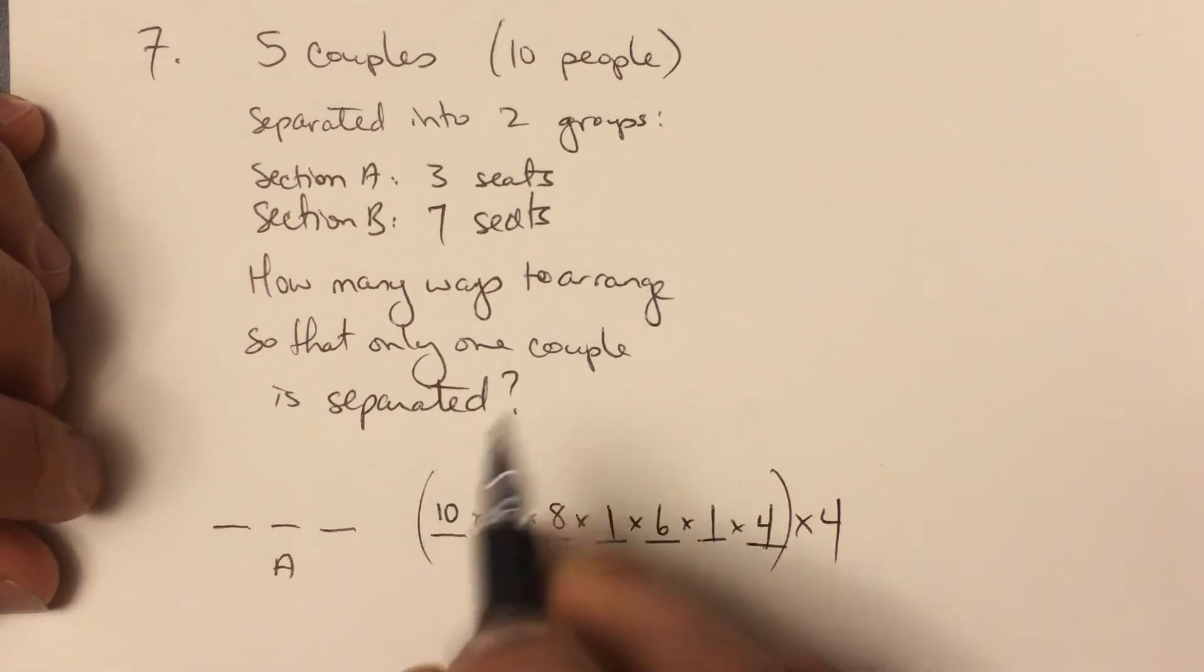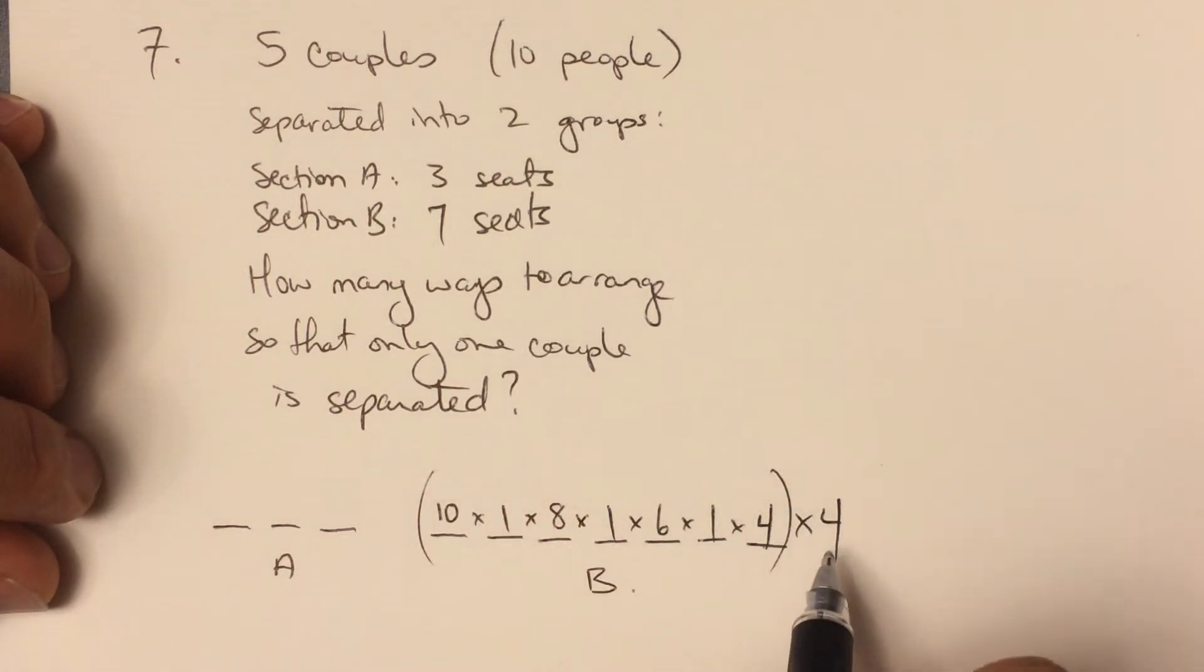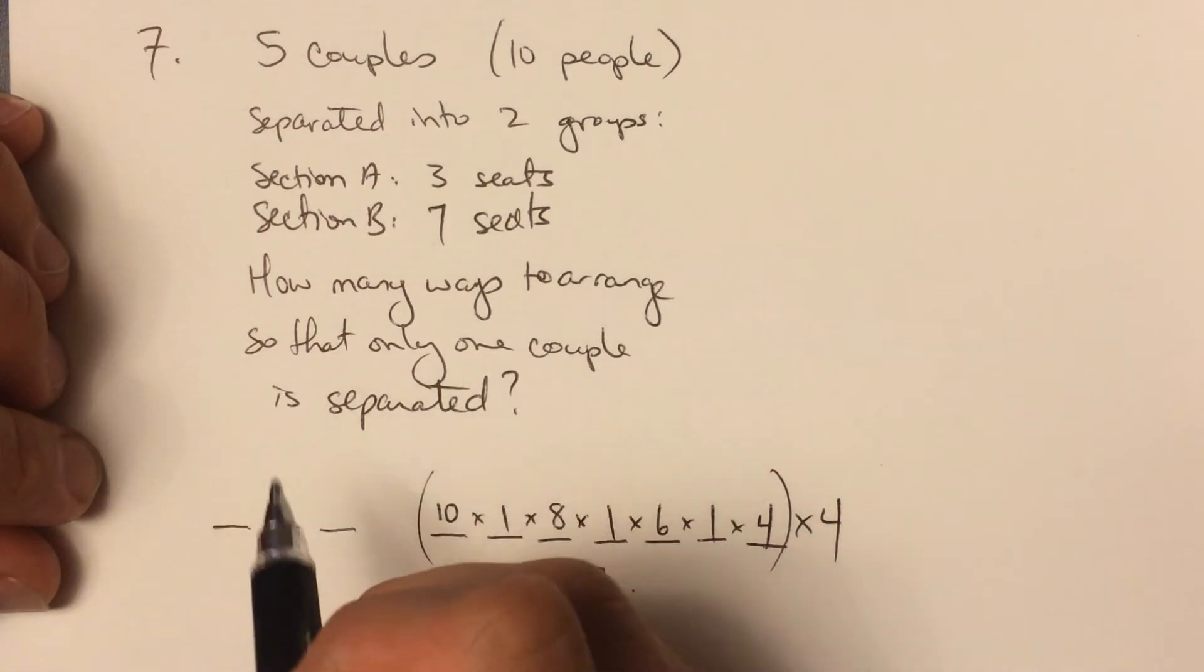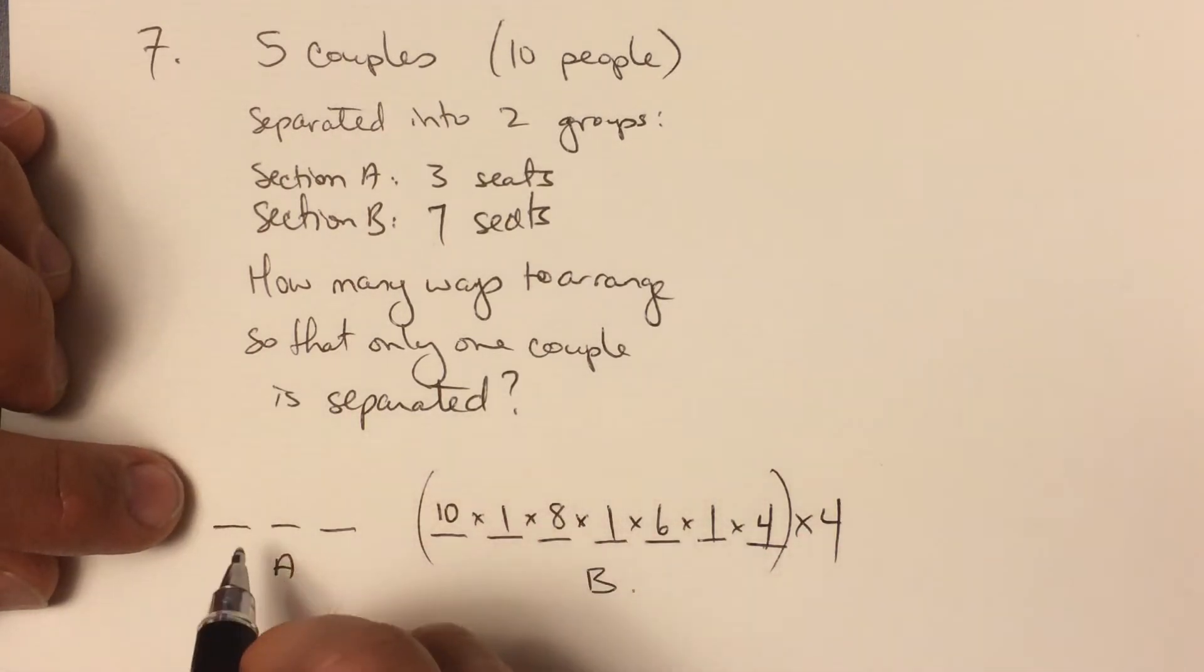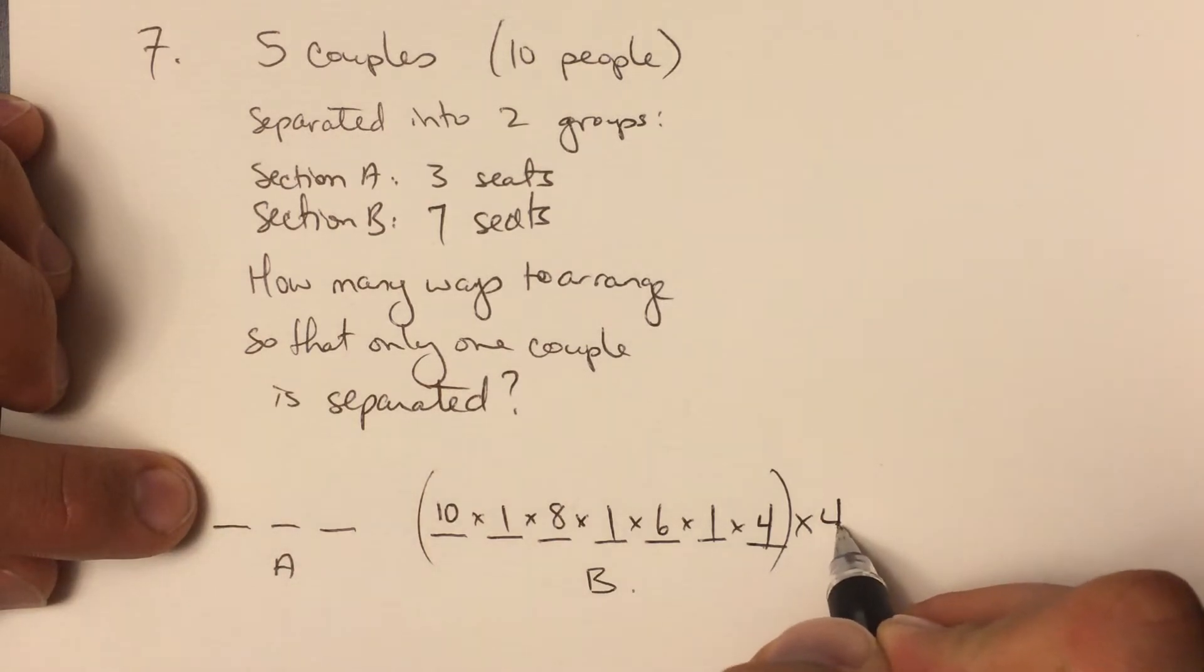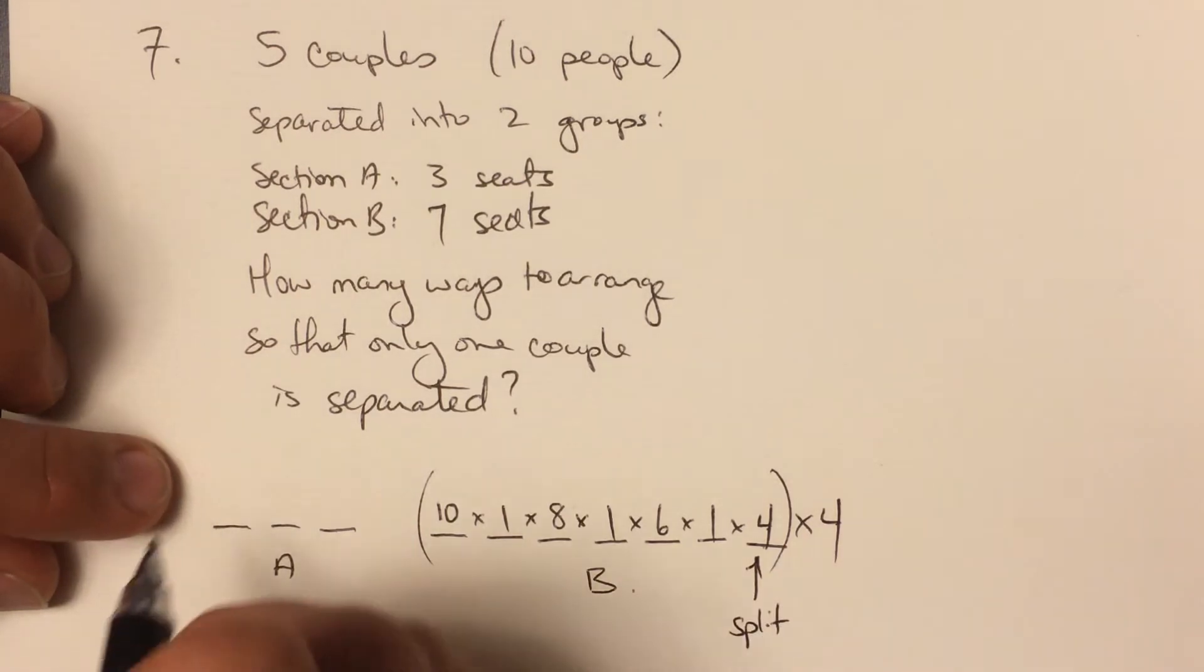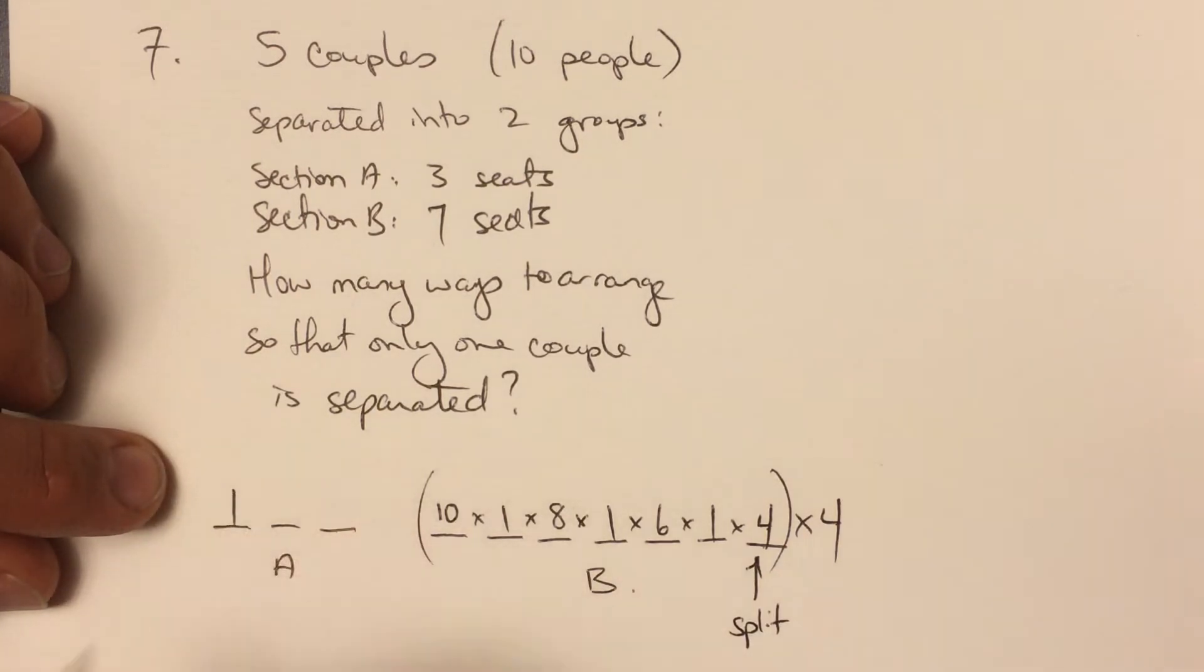Now what that means is over here somewhere I need to put the partner for this person right here. This is the split couple. So I'm going to put the other partner, let's say, in that first seat. And again, we can move that person in a second.